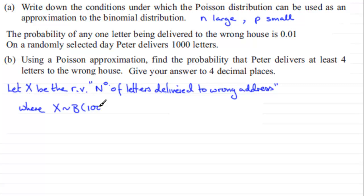So the number of trials is 1000. We're delivering 1000 letters. And the probability of being delivered to a wrong address is 0.01. So we've defined our binomial distribution.